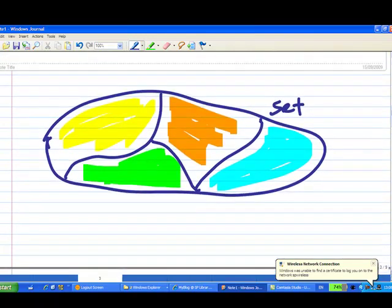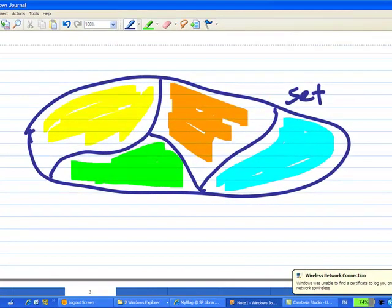So here is a diagram representing a set. Now I have divided the set into four subsets of different colors: yellow, green, blue, and light blue and orange.